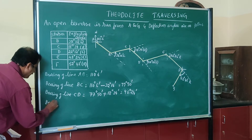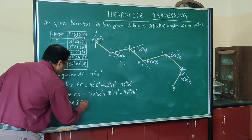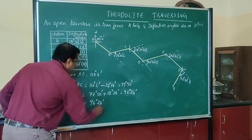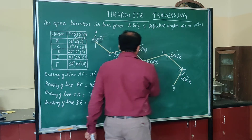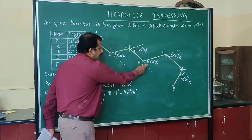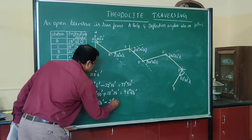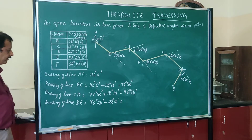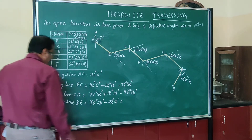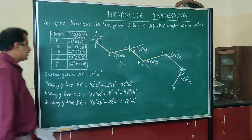Similarly, bearing of line DE equals the previous bearing 96 degrees 24 minutes. The deflection angle at D is to the left, so we subtract: 96 degrees 24 minutes minus 22 degrees 12 minutes, giving a bearing of line DE equal to 74 degrees 12 minutes.